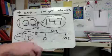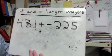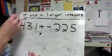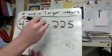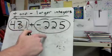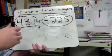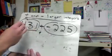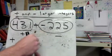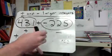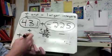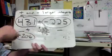Next: 431 plus negative 225. This is already set up with the plus sign. I have 431 positives and 225 negatives — I have more positives than negatives, so my answer will be positive. There's going to be some canceling since I have both positives and negatives. After the canceling, I need to figure out how many positives are left: 431 take away 225 is 206, so my answer is positive 206.